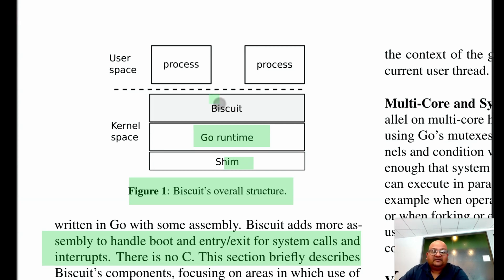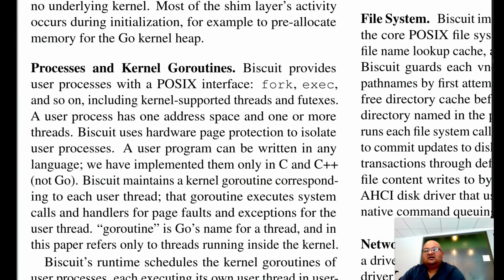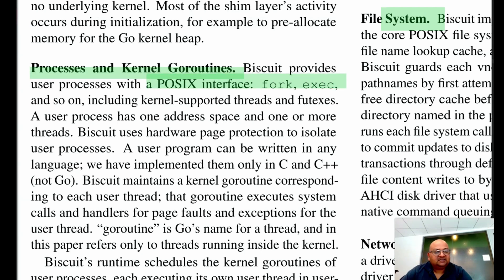The shim layer provides the things that the runtime would expect to have when it runs on a regular kernel in user space — basically things to handle memory allocation and things to handle concurrency. On top of this runtime, you have the regular operating system functionality written in Go code. And then in user space, you have your regular processes. Biscuit supports a pretty standard subset of the POSIX interface, so it looks very much like a Unix-like operating system.